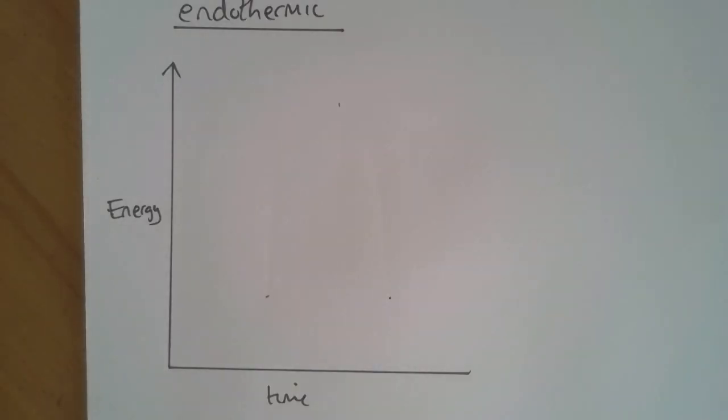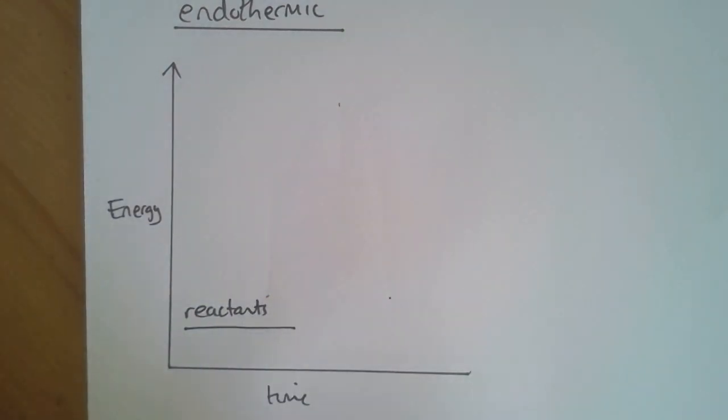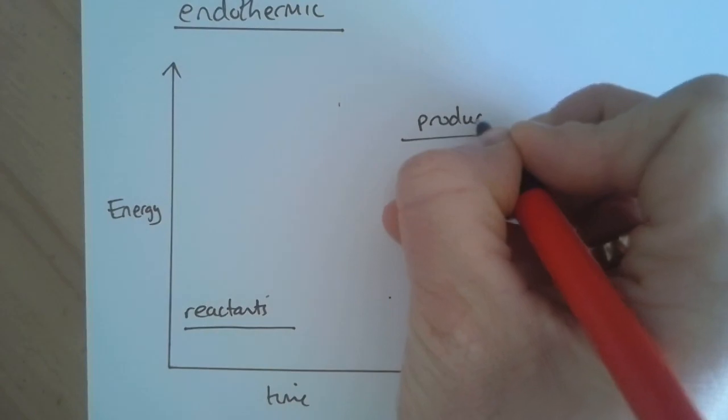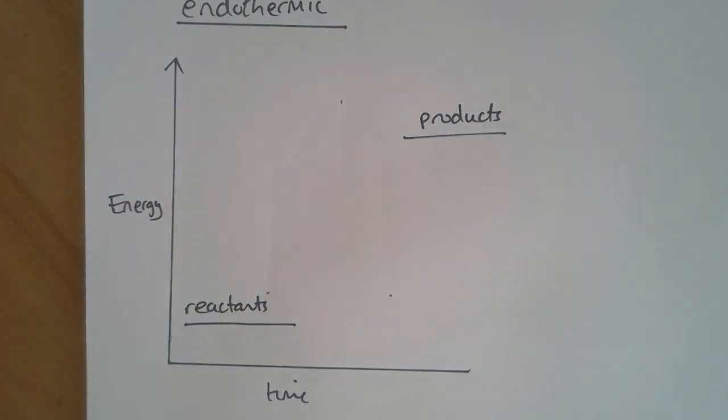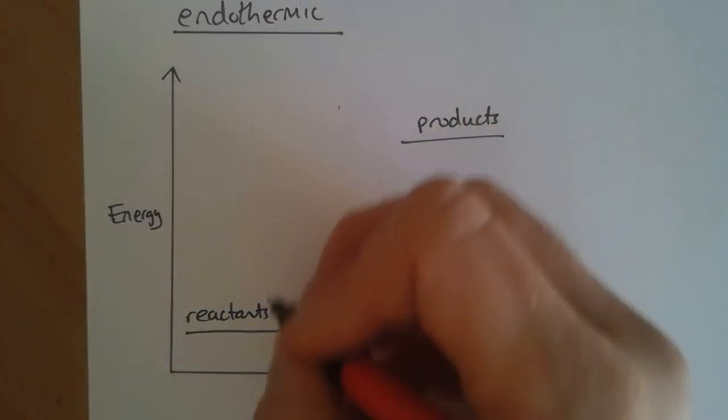For an endothermic reaction, the reaction energies are the other way around. So this time, the energy of the reactants is below the energy of the products. The reason for this is because energy is absorbed from the surroundings and locked up as chemical potential energy.